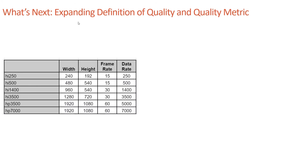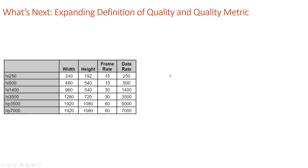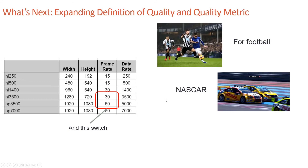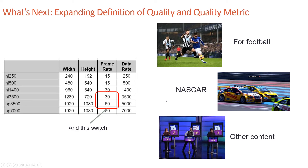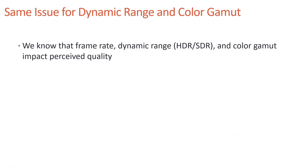What's next is an expanded definition of quality and the metric that measures it. Consider an encoding ladder based on 60 frames per second footage with three frame rates: 60, 30, and 15. Key decisions include when to switch from 15 to 30 and from 30 to 60 — and how those decisions change for high-motion content like football or NASCAR. The same issue applies for dynamic range and color gamut.